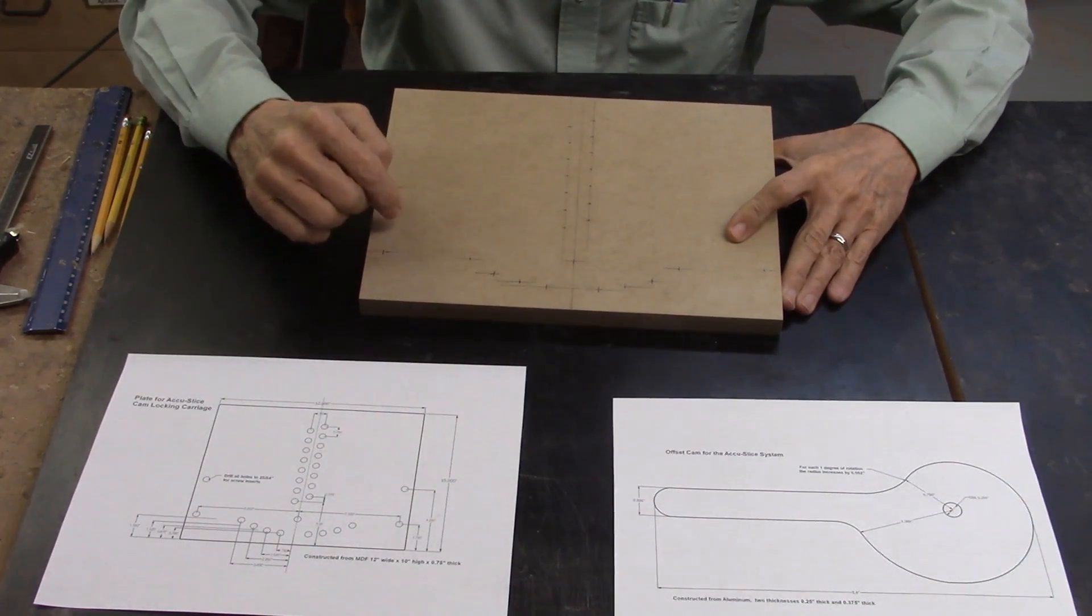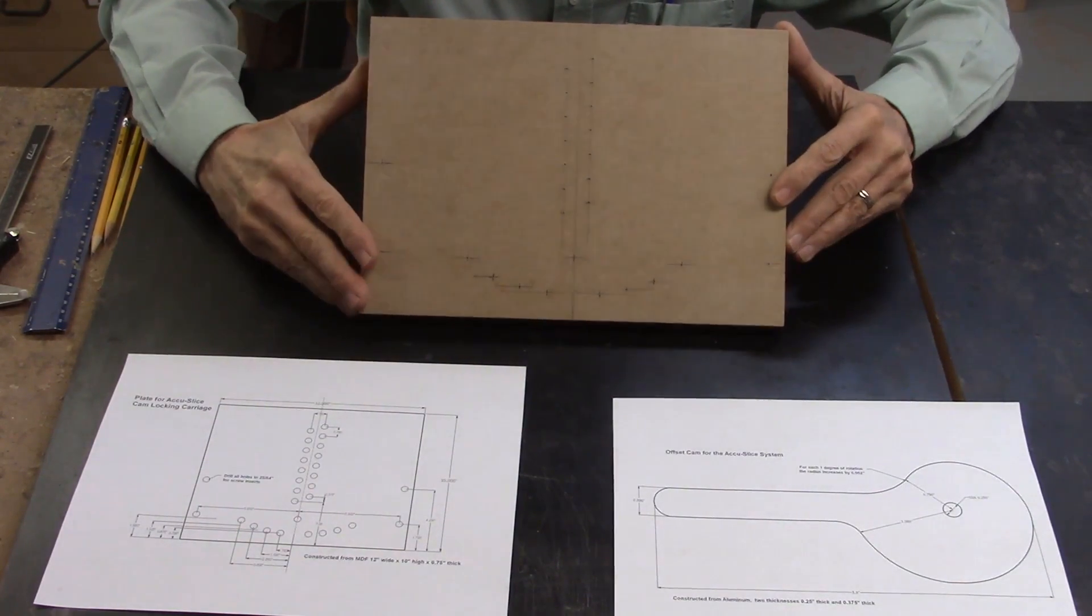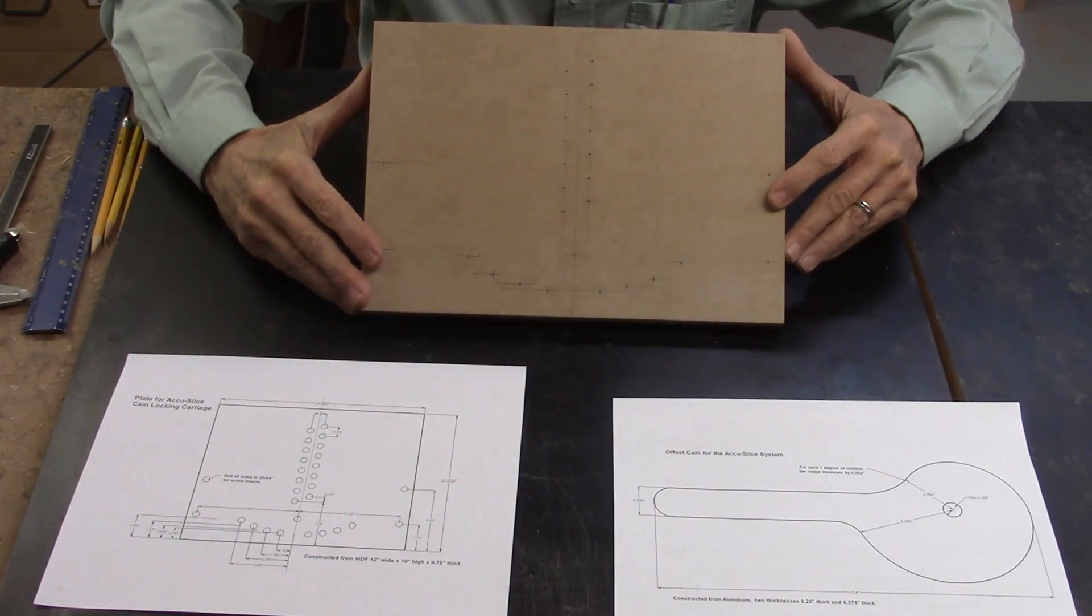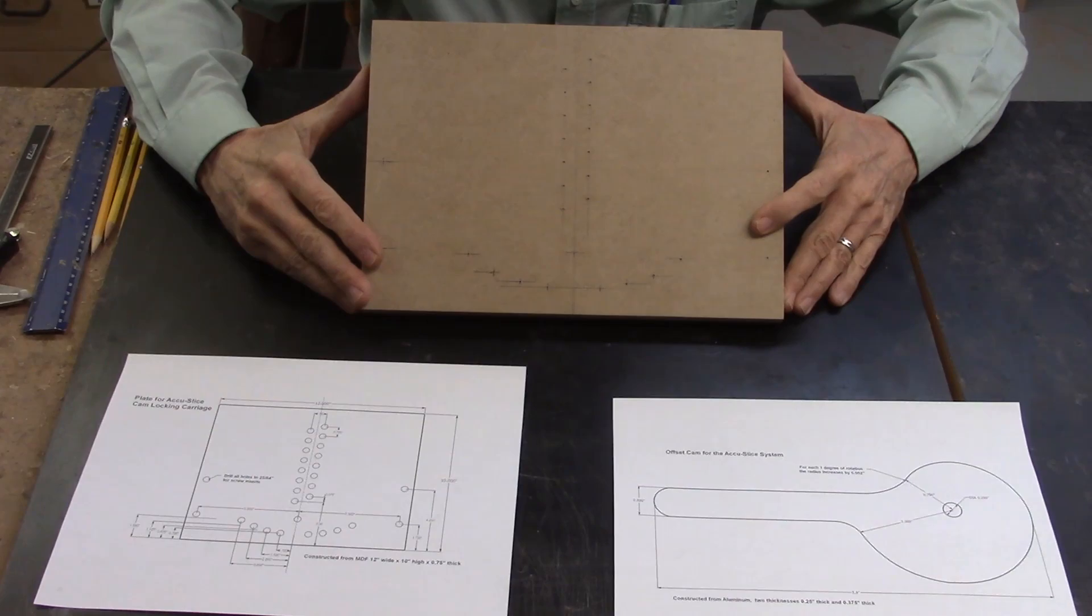I also used the center punch to accurately locate each of these hole positions. Each of the holes will be drilled out using a twenty-five sixty-fourth-inch drill bit to enable the attachment of quarter-inch by twenty-thread-per-inch brass screw inserts.